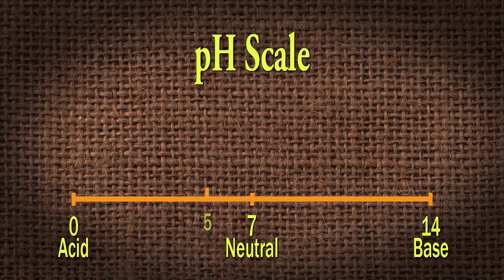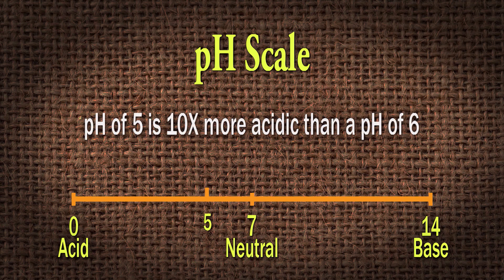Now if we tested our soil and it came back a pH of five, and we compare that to another area that came back with a pH of six, it doesn't appear to be that much difference — you think it's just one number different. But like I said, it's on an exponential scale. A pH of five is really 10 times more acidic than a pH of six. Likewise, if you move up to a seven, a five would be 100 times more acidic. Every full single number you move up, you're moving exponentially.